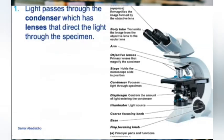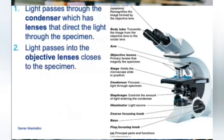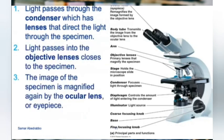To summarize how light passes through the microscope: the light goes through the condenser, through the specimen, through the objective lens, through the ocular lens, and then you can see your slide.